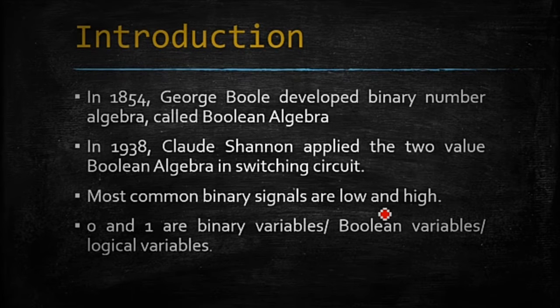In 1938, Shannon applied the two-value Boolean algebra in switching circuits, which are on and off. Most commonly binary signals are low and high. 0 and 1 are called binary variables, Boolean variables, or logic variables.